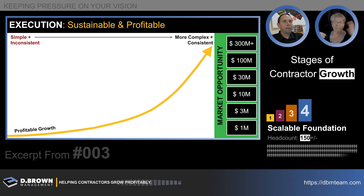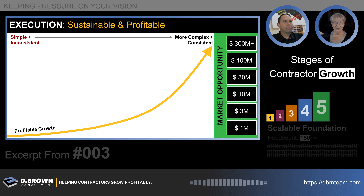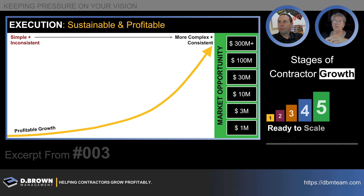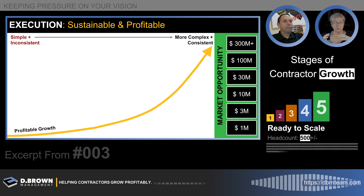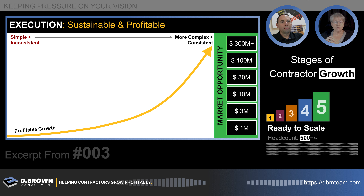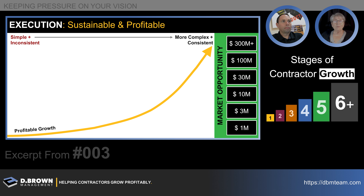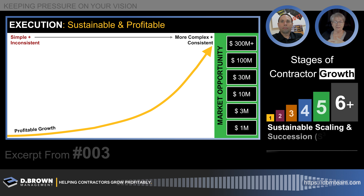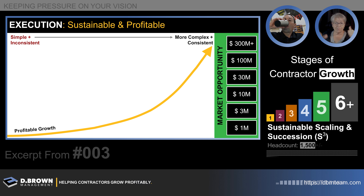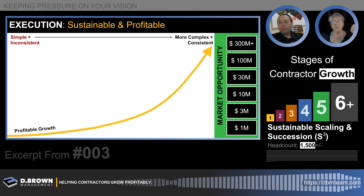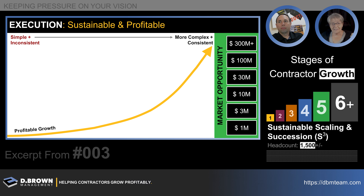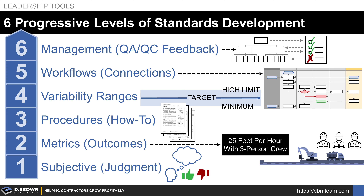Starting on the left-hand side of the slide, when you're at that million dollars things are very simple, which is great because that's what you need. But they tend to be inconsistent. As David talked about earlier with the thumbs up/thumbs down — you don't normally always get the same thumbs up for the same process because it's a conversation between two people, kind of how I'm feeling at the moment. It works but it can be very inconsistent.